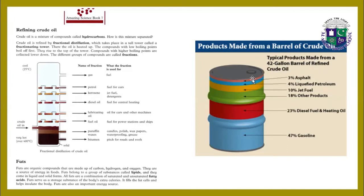Typical products made from a 42-gallon barrel of refined crude oil include: 3% asphalt, 4% liquefied petroleum gas, 10% jet fuel, 18% other products, 23% diesel fuel and heating oil, and 47% gasoline.